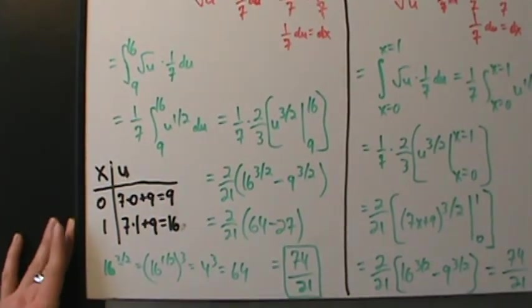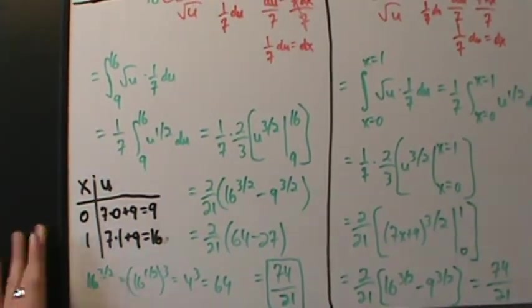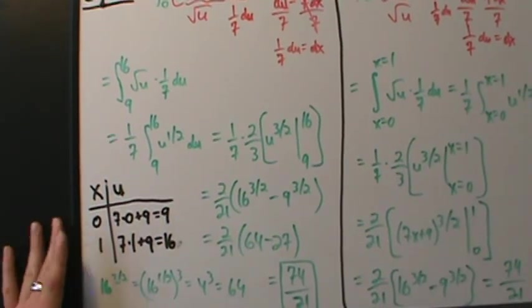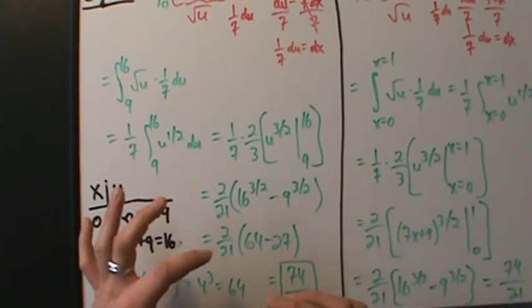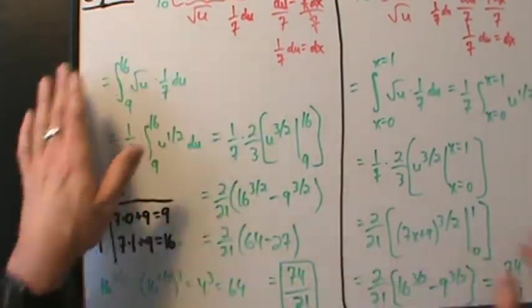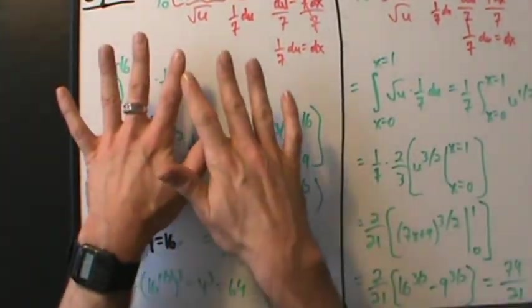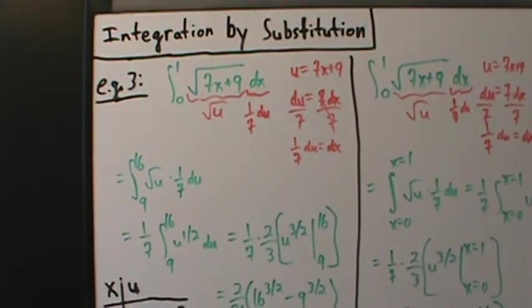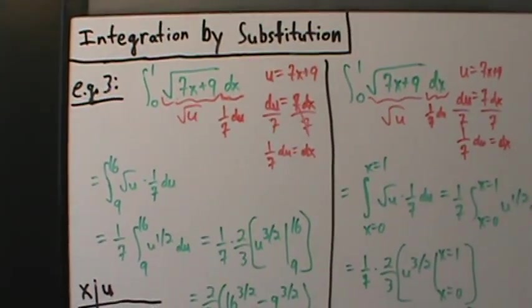So those are the two different ways of approaching definite integral substitution. For the other definite integral substitution examples, I'm just going to do it the first way — that's example three with integration by substitution.